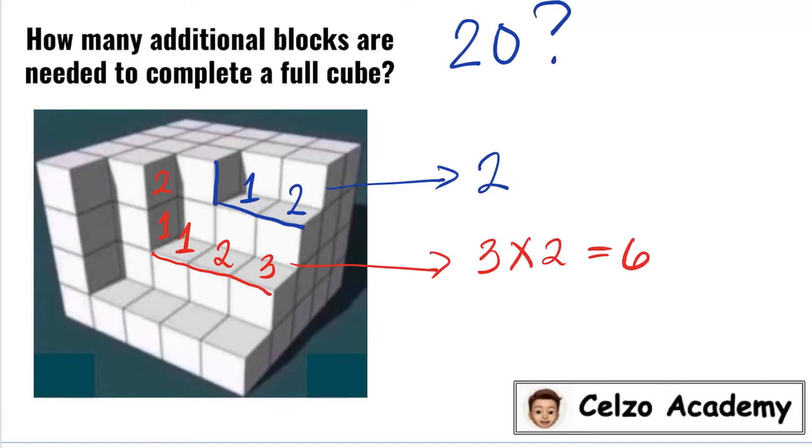How many blocks do you think we need for this third part of the shape? We have 1, 2, 3, 4.